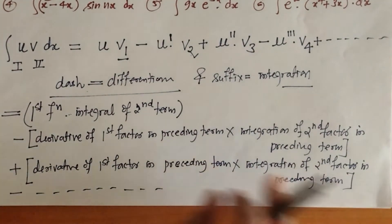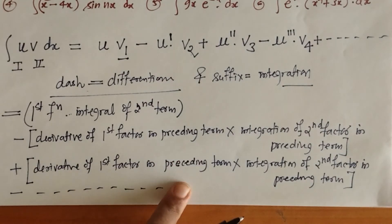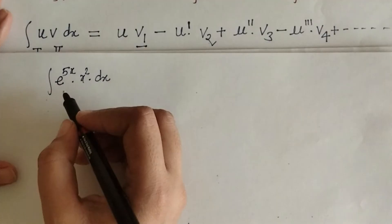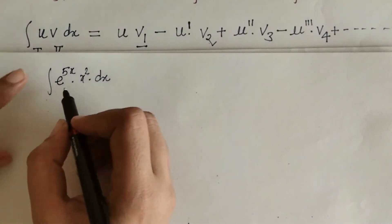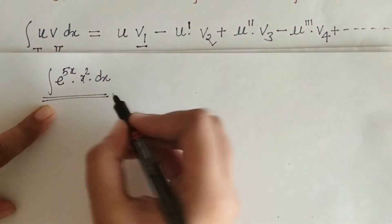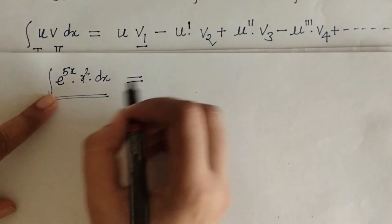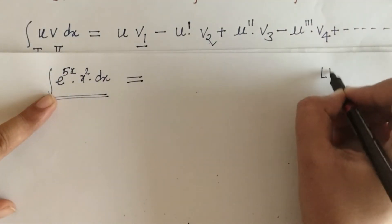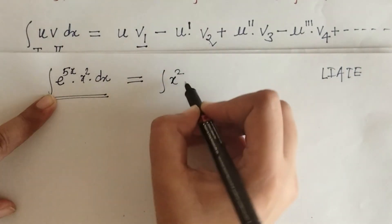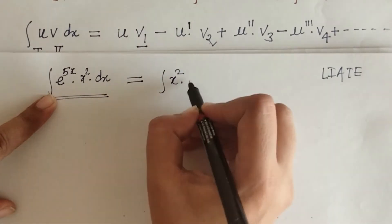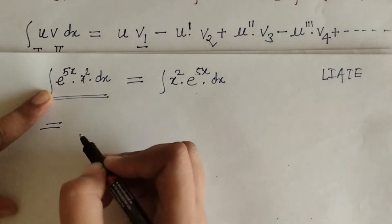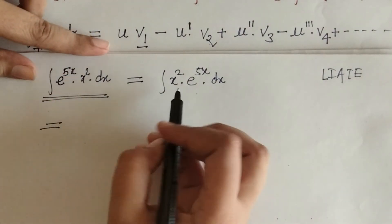Now we will see how to use this generalized rule of integration by parts with one example. We will apply this rule to evaluate this integral. So we have to arrange these two functions by the LIATE rule. So we write the first function as algebraic and the second function as exponential.